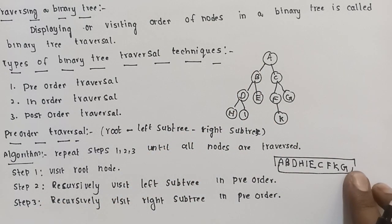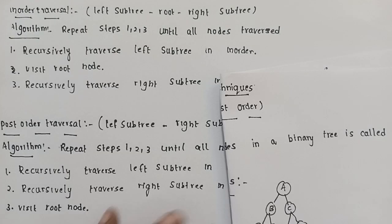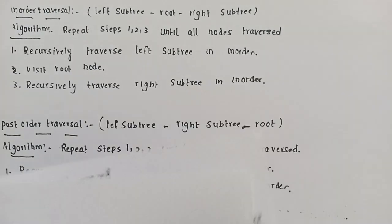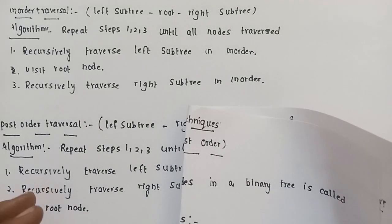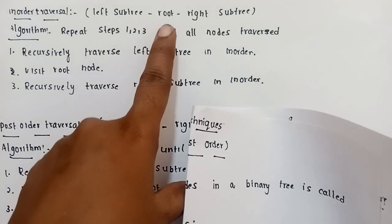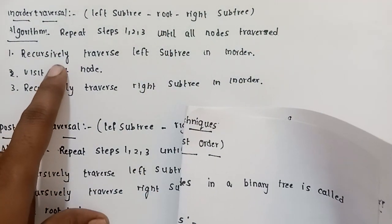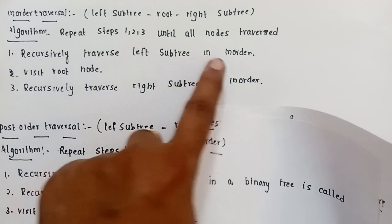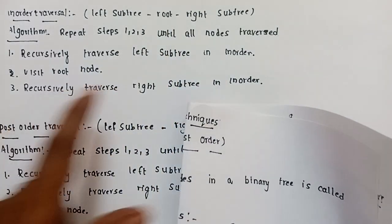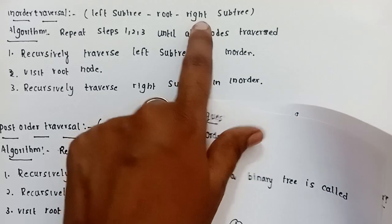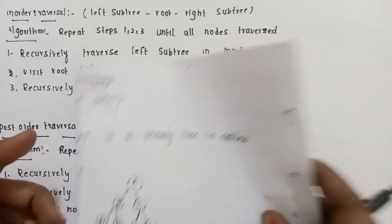In-order traversal visits the root node in the middle. First, recursively traverse the left subtree in-order, then visit the root node, then recursively traverse the right subtree in-order.